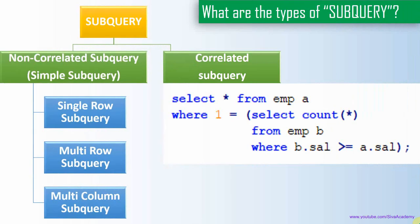Let us start with the types of subquery. As we saw in the previous videos, at a high level there are two types of subquery: non-correlated subquery and correlated subquery. Non-correlated subquery can be further classified into single row subquery, multi row subquery, and multi column subquery.